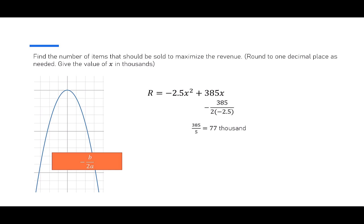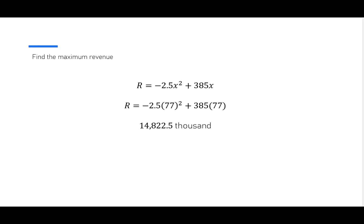Remember, the 77 represents 77,000 items that we're selling. Now that we know how many items we want to sell, we're going to find the maximum revenue by taking that number and plugging it into our equation, negative 2.5x squared plus 385x. We have negative 2.5 times 77 squared plus 385 times 77, which gives us $14,822.5 thousand.